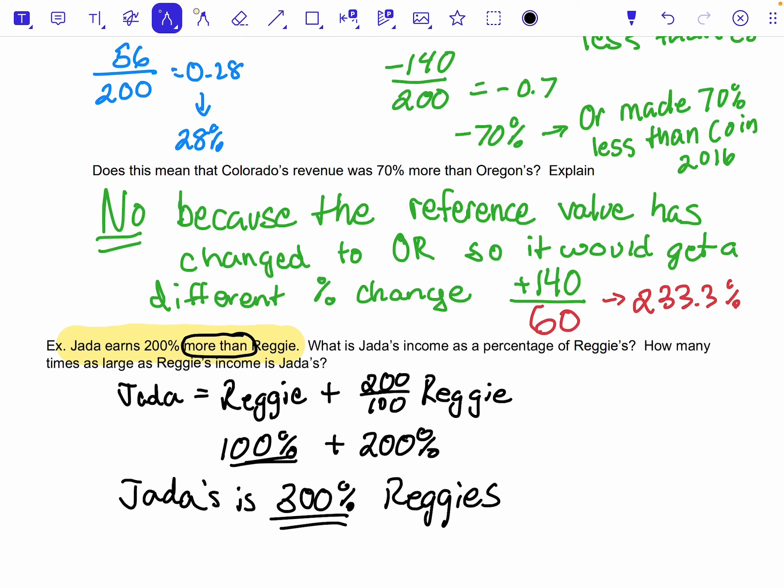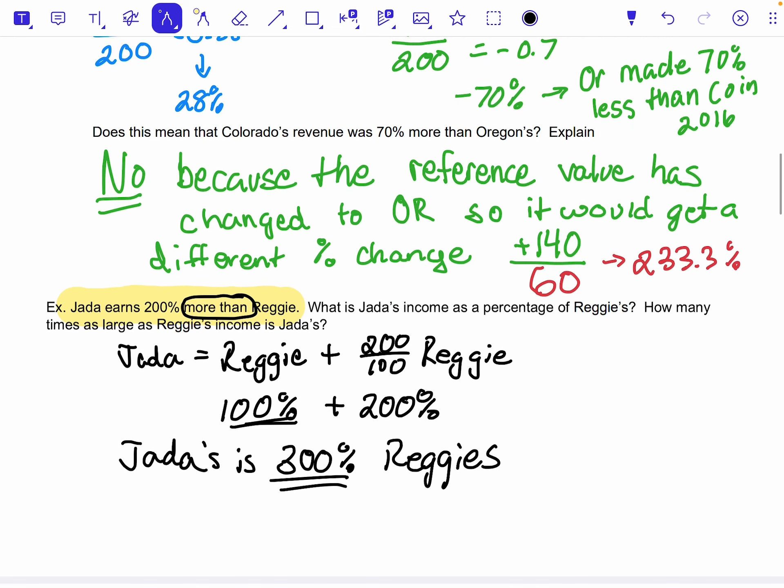Now, if I was thinking multiplicatively, then I would say Jada's is, and 300% is basically three times as large, and that's just turning it into sort of a decimal form as Reggie's.